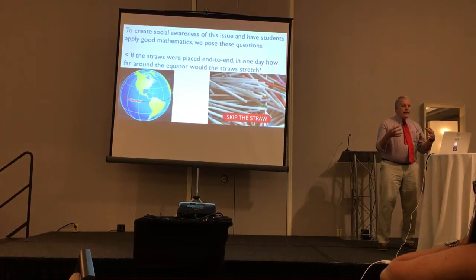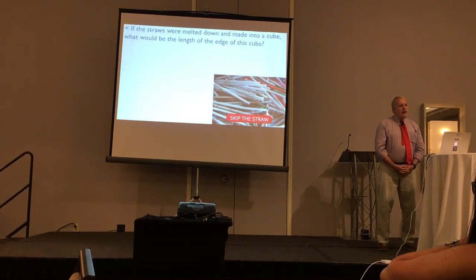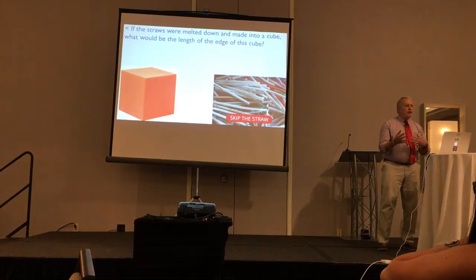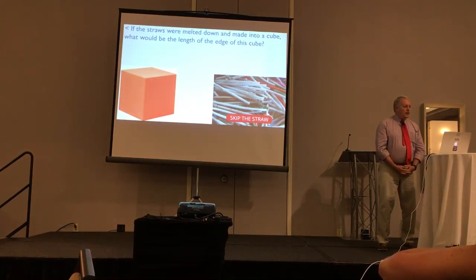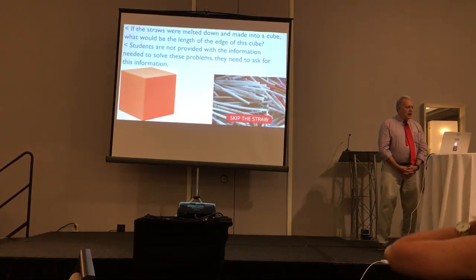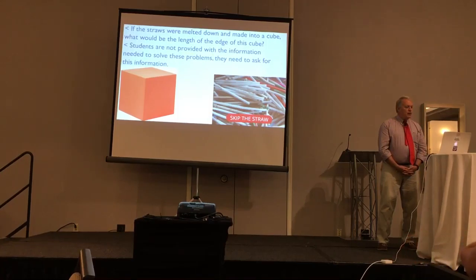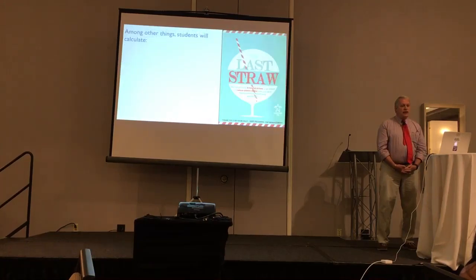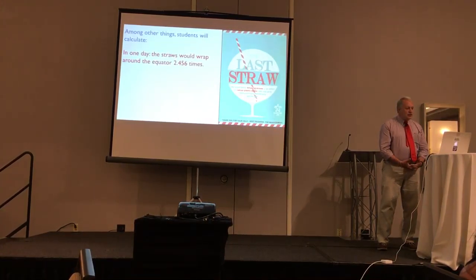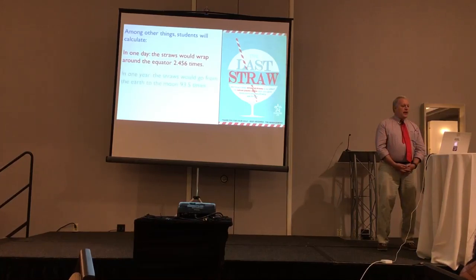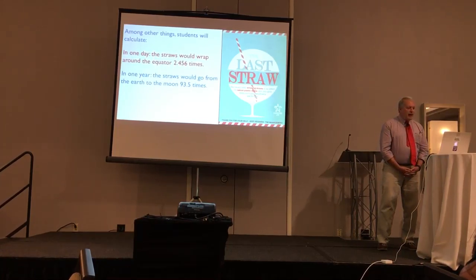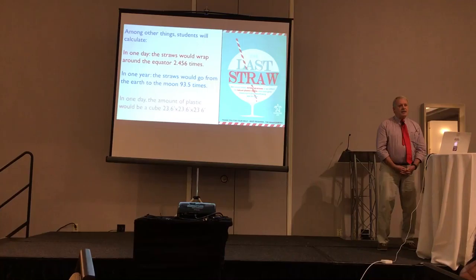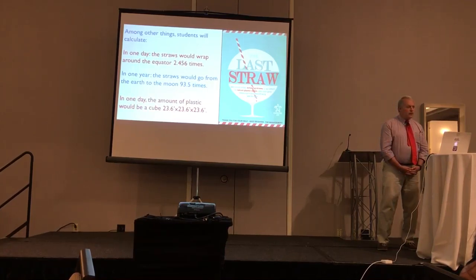To provide social awareness I came up with questions like: if you had these straws laid back to back for one day, how far would they go around the equator? And if you could take those straws and melt them down into a big plastic cube, what would be the dimensions of the cube? How far can it go back and forth to the moon? When we do this, we don't give students the information — they have to ask for it, and in doing so they're already starting to solve it, more like a real-world situation. The answer: two and a half times around the Earth, back and forth to the moon 93 and a half times, and the cube would be about 24 feet on an edge.